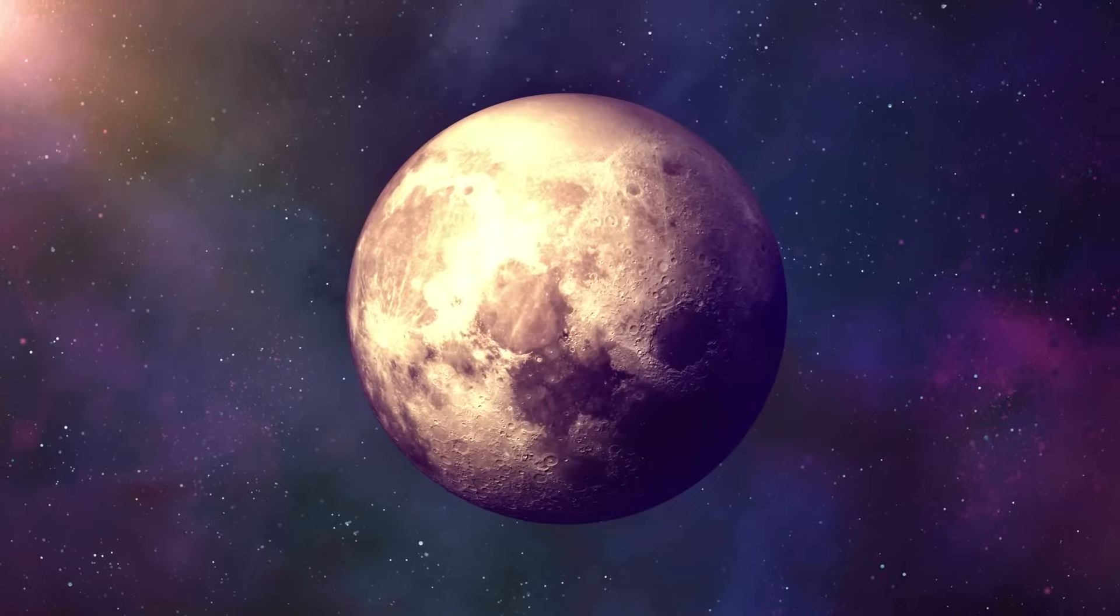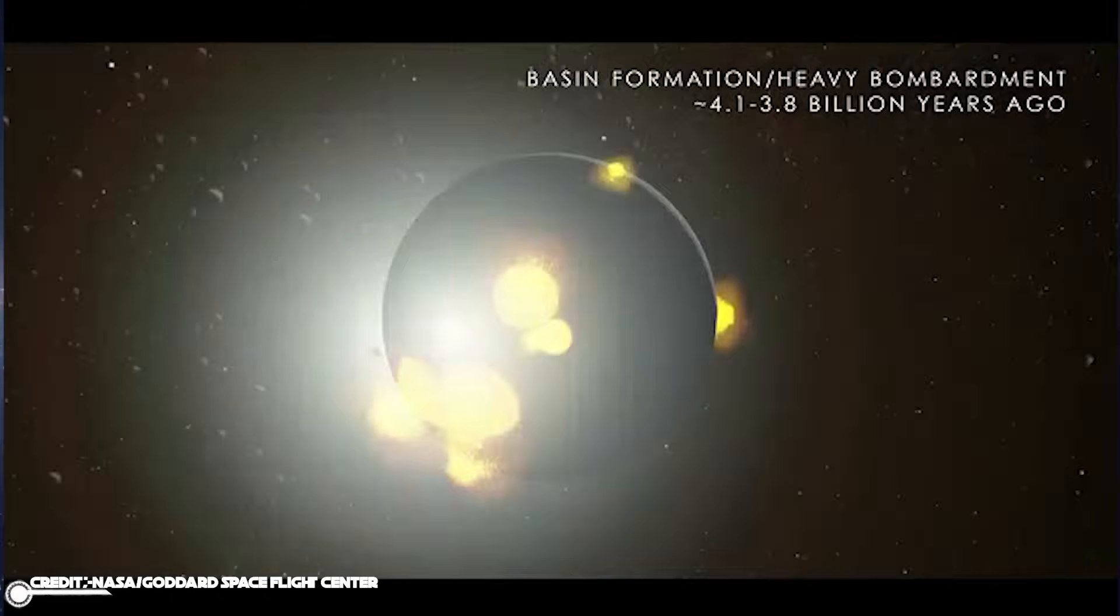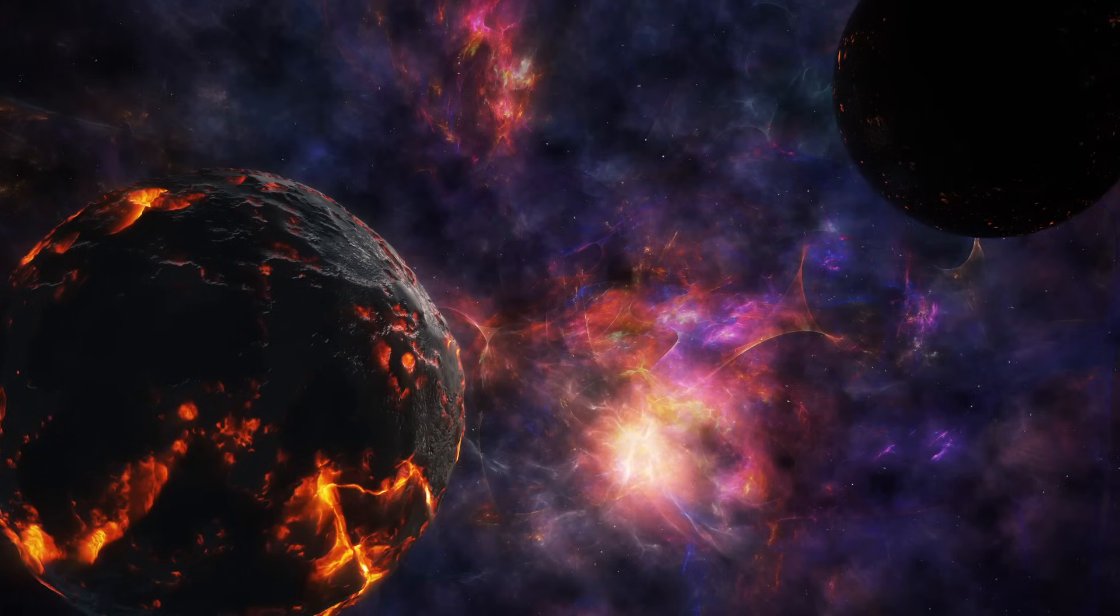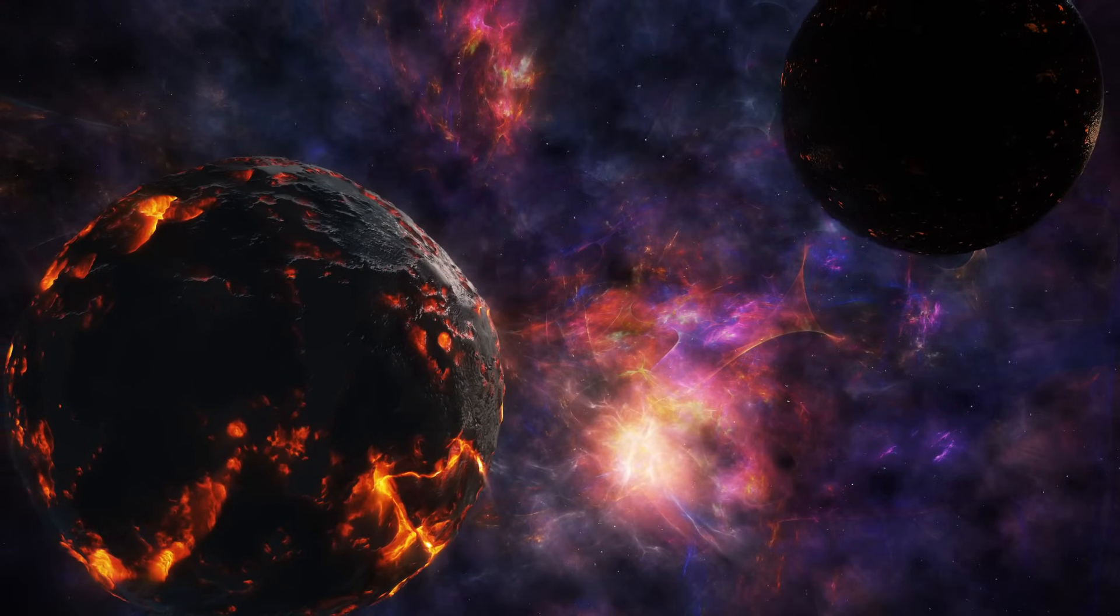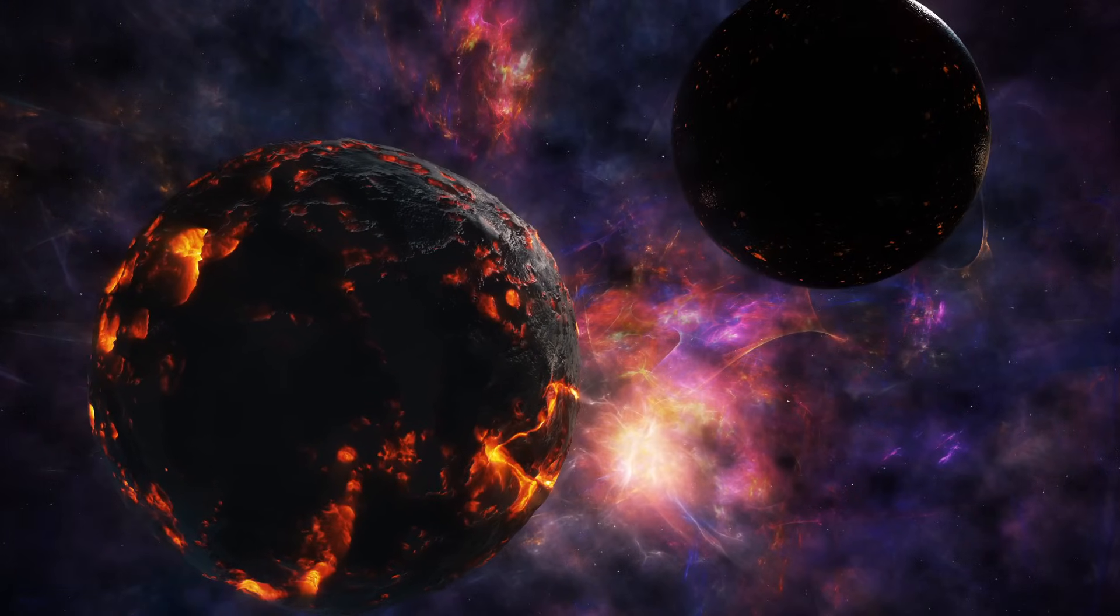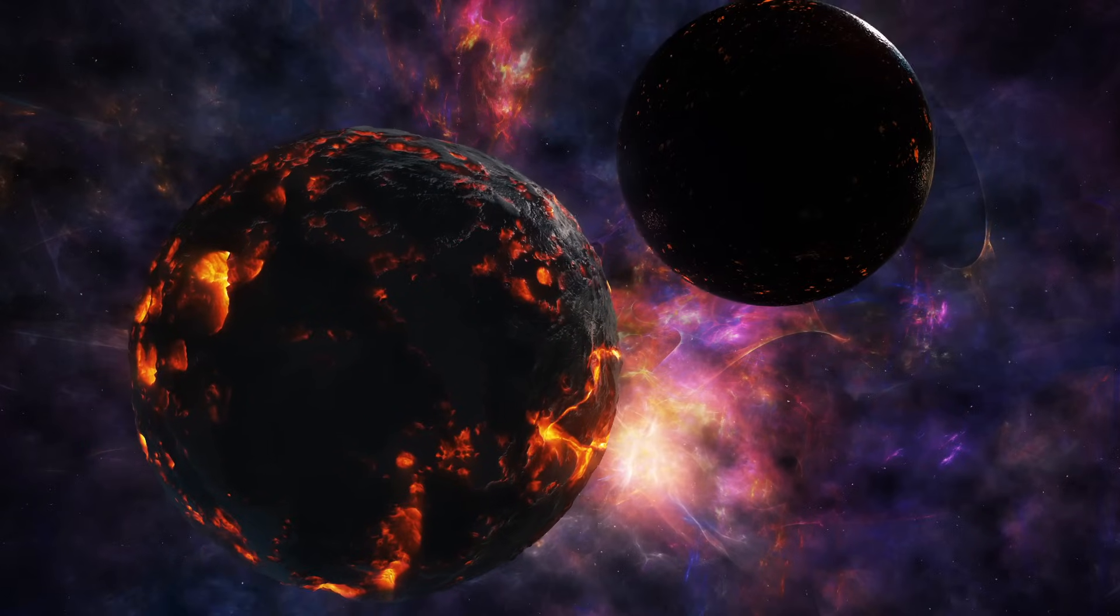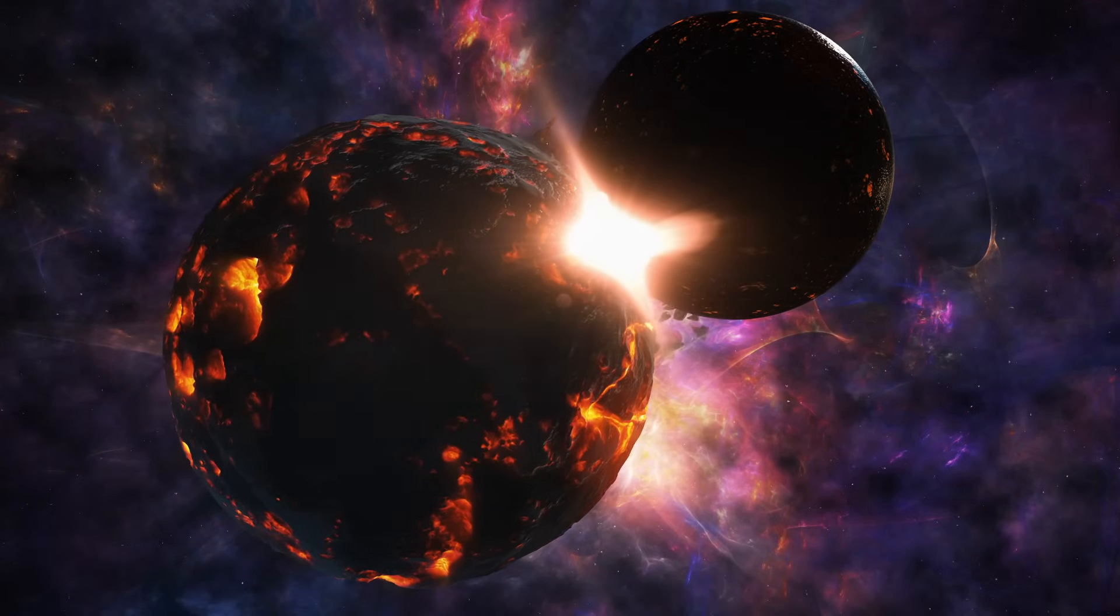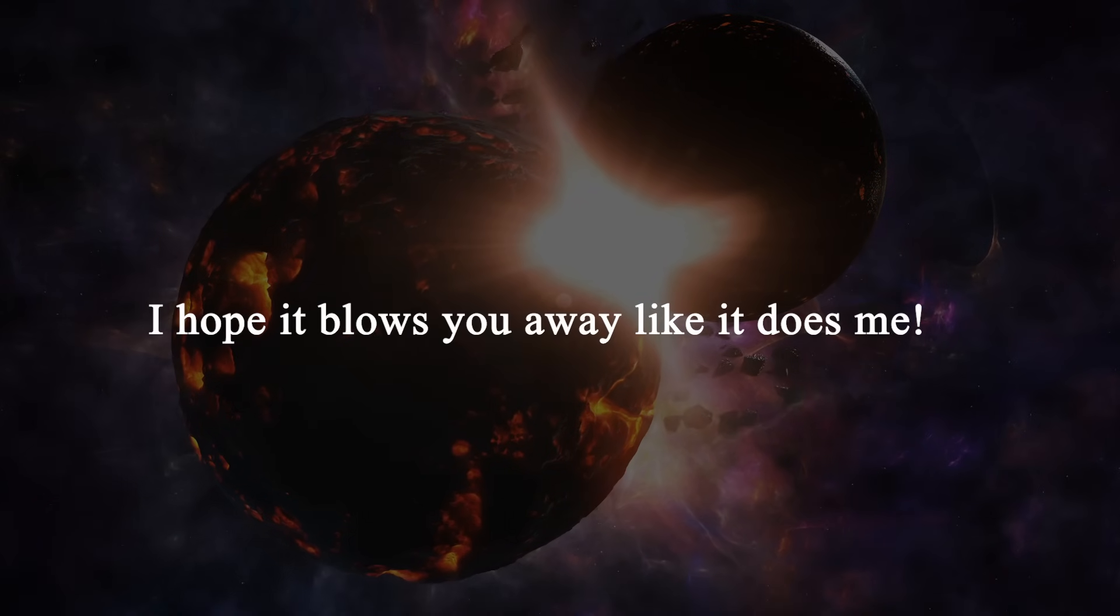Formation of the Moon. But first, it's in our interest to understand how the Moon formed to understand why it orbits our planet. The most favored hypothesis is that of the giant impact hypothesis. Two planets colliding and forming debris big enough to be the size of the Moon. Let's get into the details of that, and I hope it blows you away like it does me.